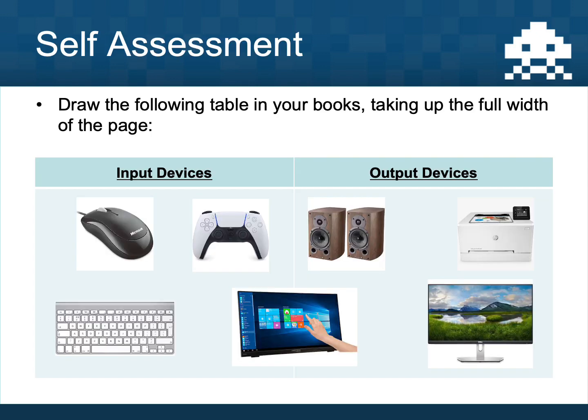Here's what I came up with. A mouse, a keyboard, and a controller for a games console are definitely input devices — ways of us as human beings getting data into our computer. I have speakers, a printer, and a monitor in my output column — those are definitely output devices. In the middle I've got a touchscreen, which is an input device because you can touch different applications, but also an output device because you can see things on the screen — so a touchscreen phone is both. Pause the video and correct any errors as needed.